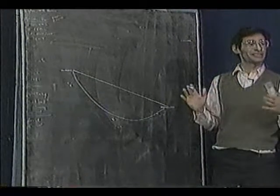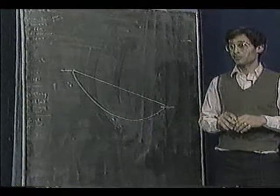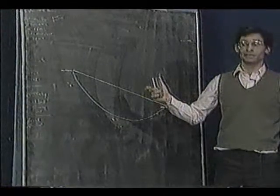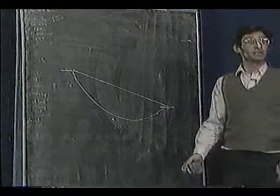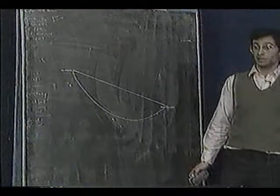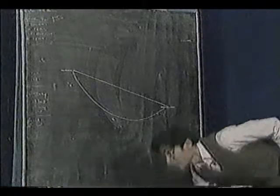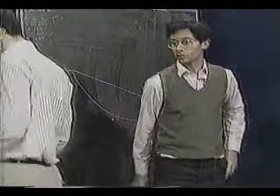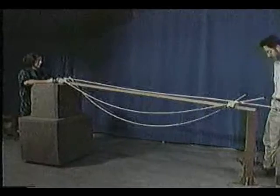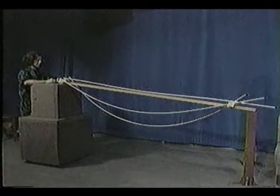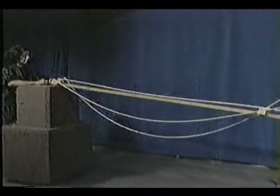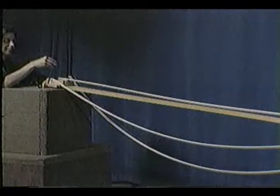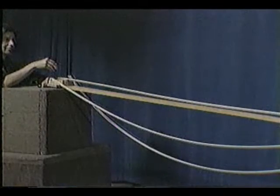Not everyone finds this totally obvious, so what we've done — and this is like a special treat for the history of television — we've got a demonstration here where we're going to try and show you that it's really so. If we go over to the other picture, we've constructed these little roller coasters here with the molding, and we've got some ball bearings, and Sharon's going to drop the ball bearings.